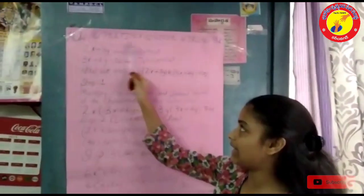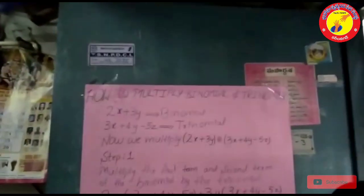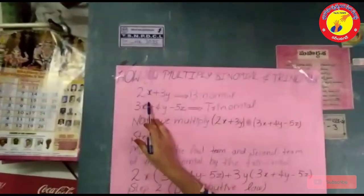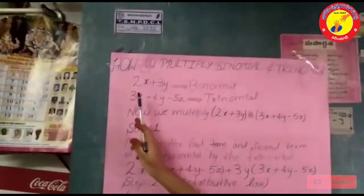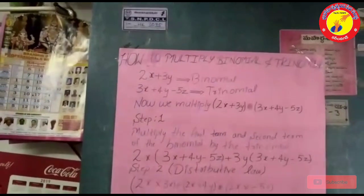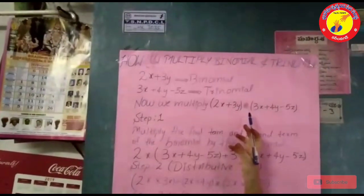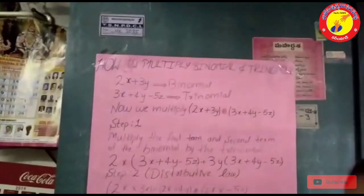I am telling you how to multiply binomial and trinomial. See here the binomial is 2x plus 3y and the trinomial is 3x plus 4y minus 5z. Now we have to multiply 2x plus 3y into 3x plus 4y minus 5z.